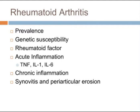Twin studies show greater concordance between monozygotic twins, and specific genotypes such as HLA-D4 have been shown to have increased susceptibility to developing rheumatoid arthritis. The essential mediating factor is rheumatoid factor, which is the catch-all term used to describe the auto-antibodies directed towards immunoglobulin in the patient's serum.